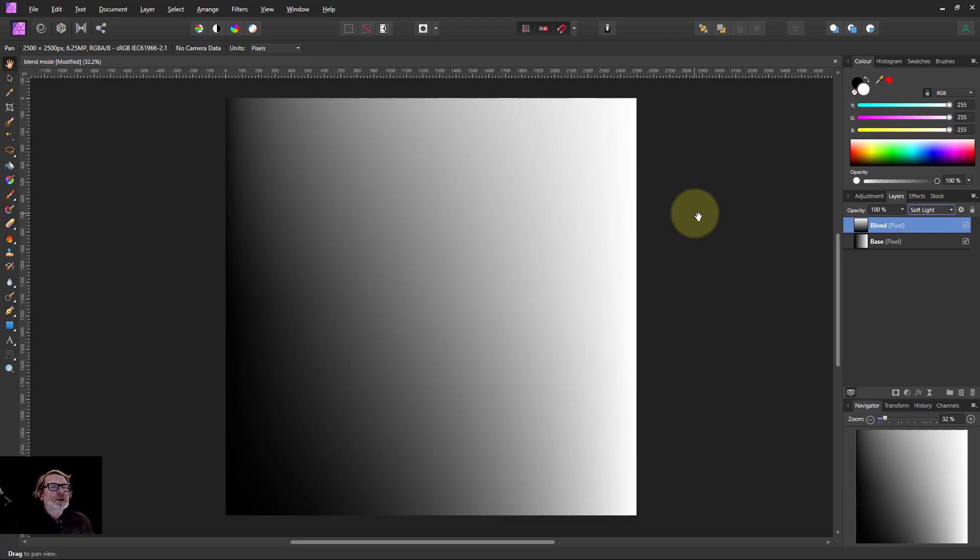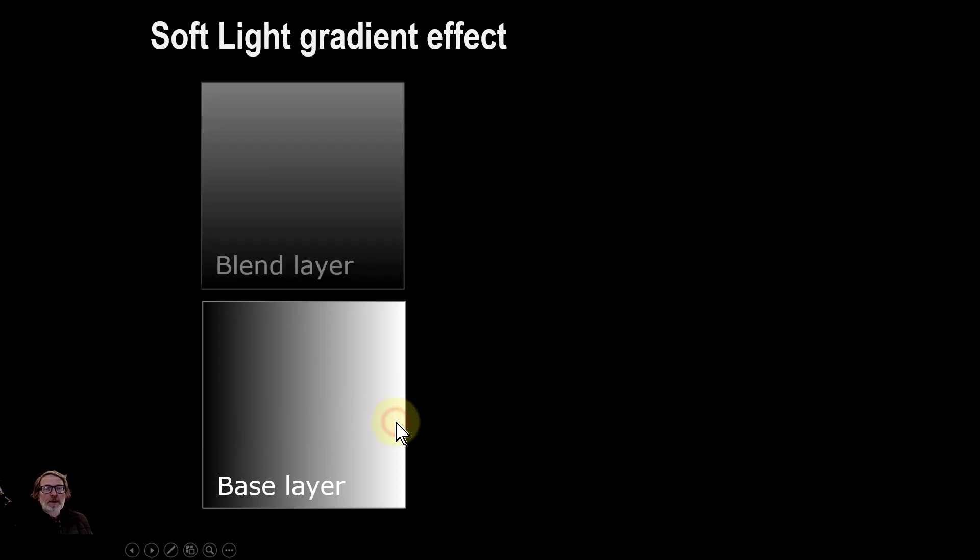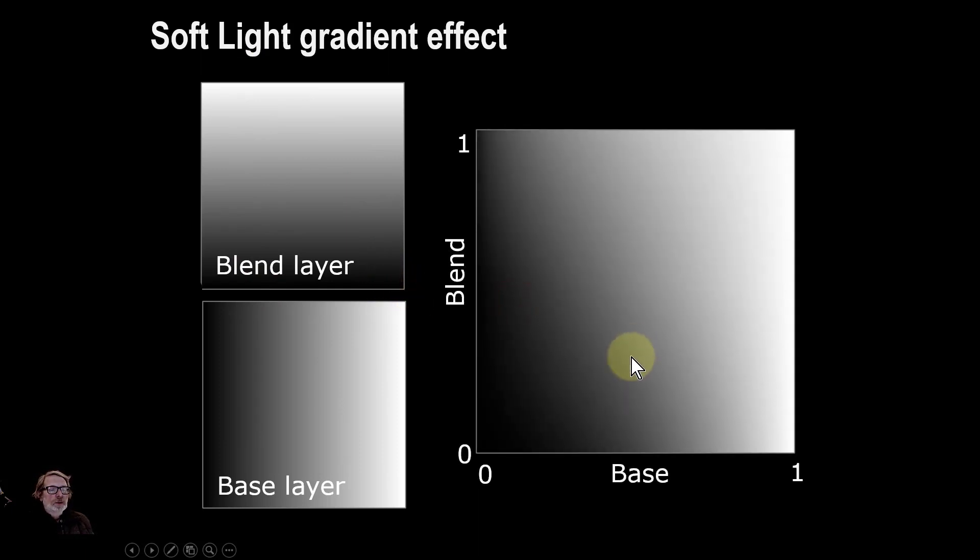So let's have a look at that over here. So there's the base layer going from 0 to 1 that way, and the blend layer going from 0 to 1 that way, dark to light. And when we blend them together we get this. So when base is 0, when it's dark, it's always going to be dark. Doesn't matter what the blend layer is. Similarly when the base is white, this is white, which is nice because it means it preserves the blacks and the whites.